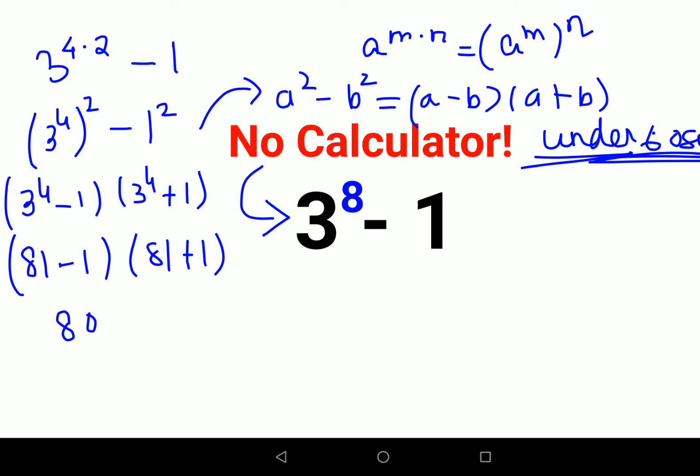So this is what? 80 into 82. Now this multiplication is obviously much easier.